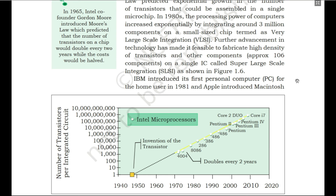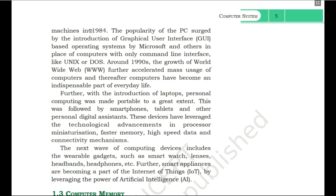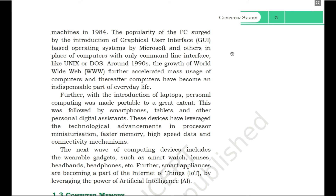IBM introduced its first personal computer for the home user in 1981, and Apple introduced the Macintosh in 1984. The popularity of the personal computer — PC, the computer used by a normal user at home — emerged with the introduction of the graphical user interface. When operating systems based on the graphical user interface came to market from Microsoft and other vendors, the popularity of computers at home got increased.